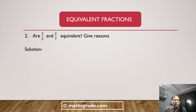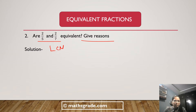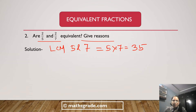Second question: are 2 divided by 5 and 2 divided by 7 equivalent or not? Give reasons. We have to verify whether fractions 2/5 and 2/7 are equivalent or not. First, we find the LCM — the least common multiple — of the denominators 5 and 7. Both 5 and 7 are prime numbers, so LCM is 5 multiplied by 7, which equals 35.